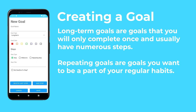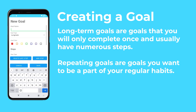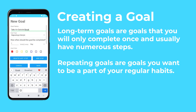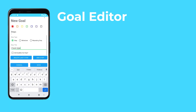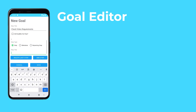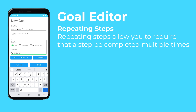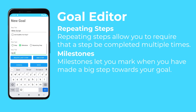You can set a goal from both the daily goal and regular goal page. You can create a long-term or repeating goal. Would you like to save $1,000 in a savings account? That would be made as a long-term goal. Or maybe you want to walk 10,000 steps every day — that would be a repeating goal. In the goal editor, you can add steps you need to complete to achieve your goal, set repeating steps, and set milestones for yourself to mark your progress.